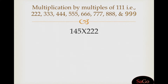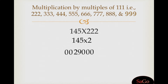In this video we learn how to multiply with the multiples of triple one. We have the sum 145 multiplied by triple 2. We multiply 145 by 2, because triple 2 is a multiple of triple 1. 145 into 2 is 290. Put two zeros on both the sides, then add these digits in pairs.